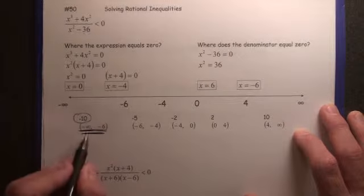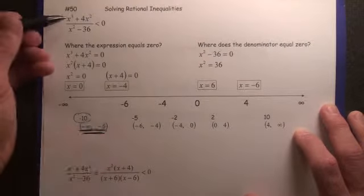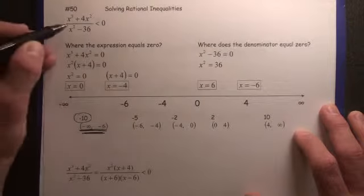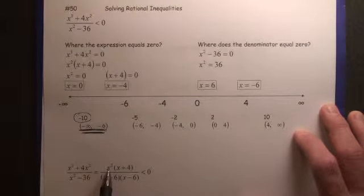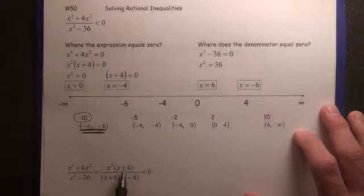So we're going to use -10 to help us find out whether or not negative infinity to -6 is a correct answer to this inequality. So we plug -10 into the inequality. We get 100 times, what is that, -6.